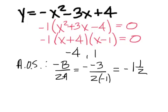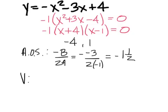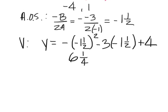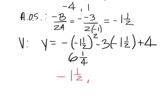Are there any questions about zeros and axis of symmetry? For the vertex, you're going to have to plug in the axis of symmetry, so it's y equals negative, quantity squared of negative 1 and 1 half, minus 3 times negative 1 and 1 half, and then plus 4. On a scientific calculator: hit negative, left parenthesis, negative 1.5, right parenthesis, square, minus 3, left parenthesis, negative 1.5, right parenthesis, plus 4. You should get back 6 and 1 fourth. So the vertex would be negative 1 and 1 half, and then 6 and 1 fourth.